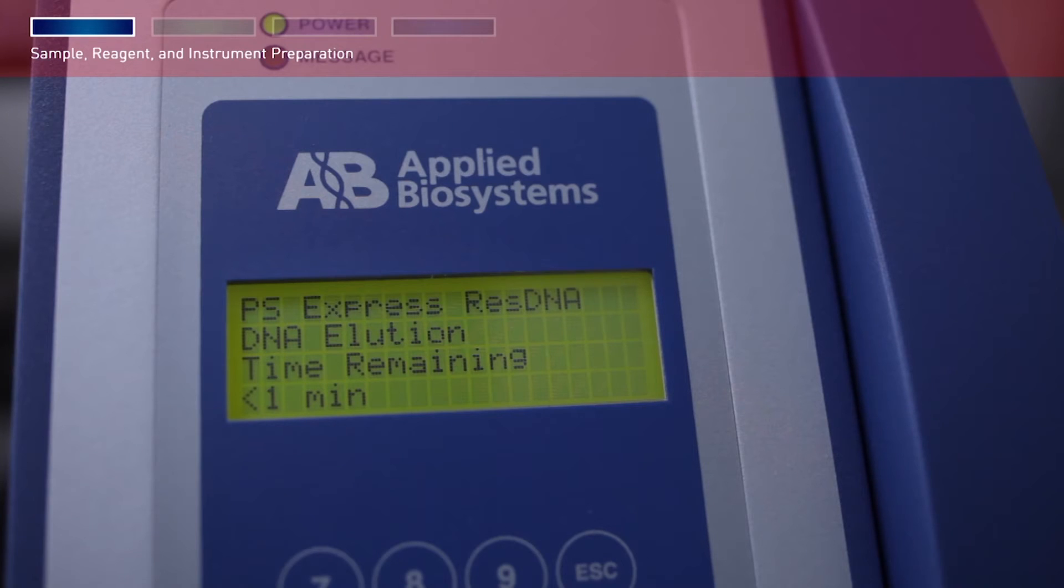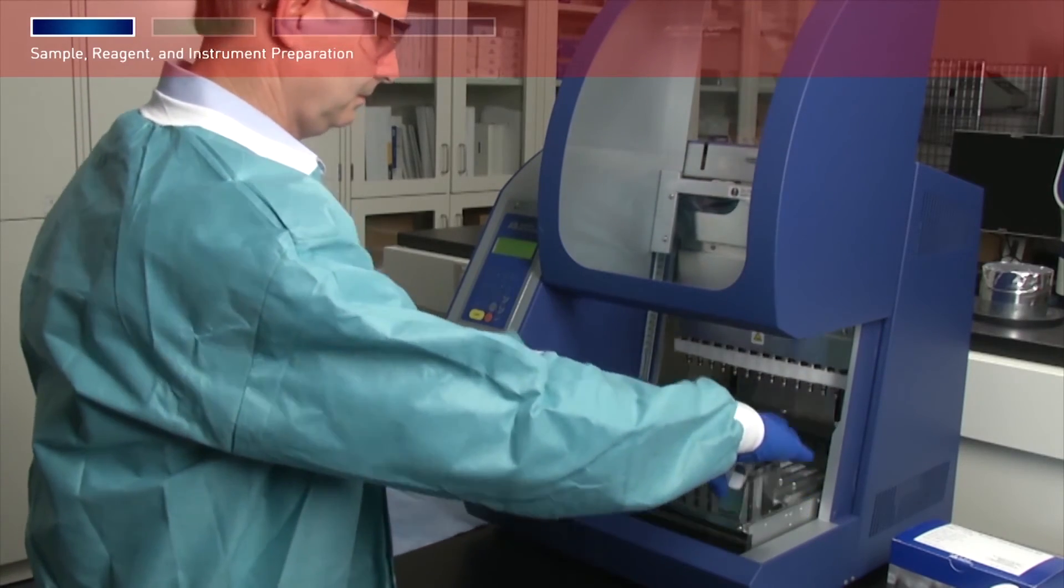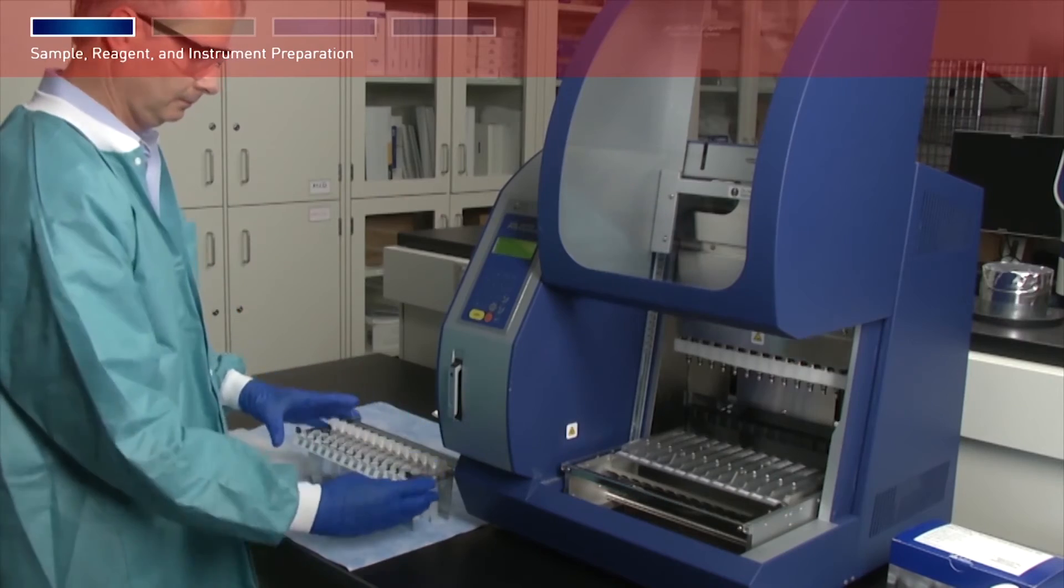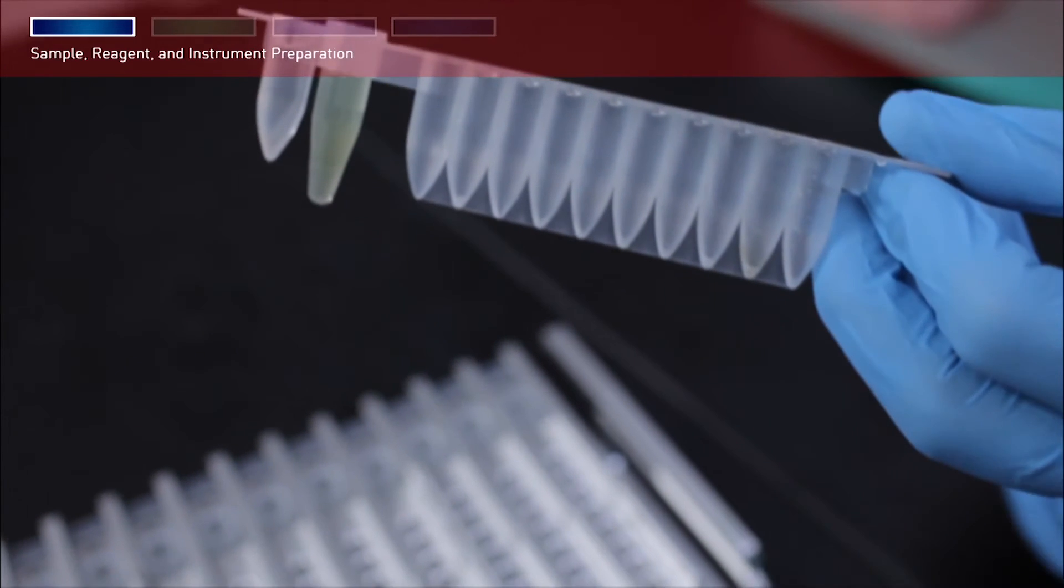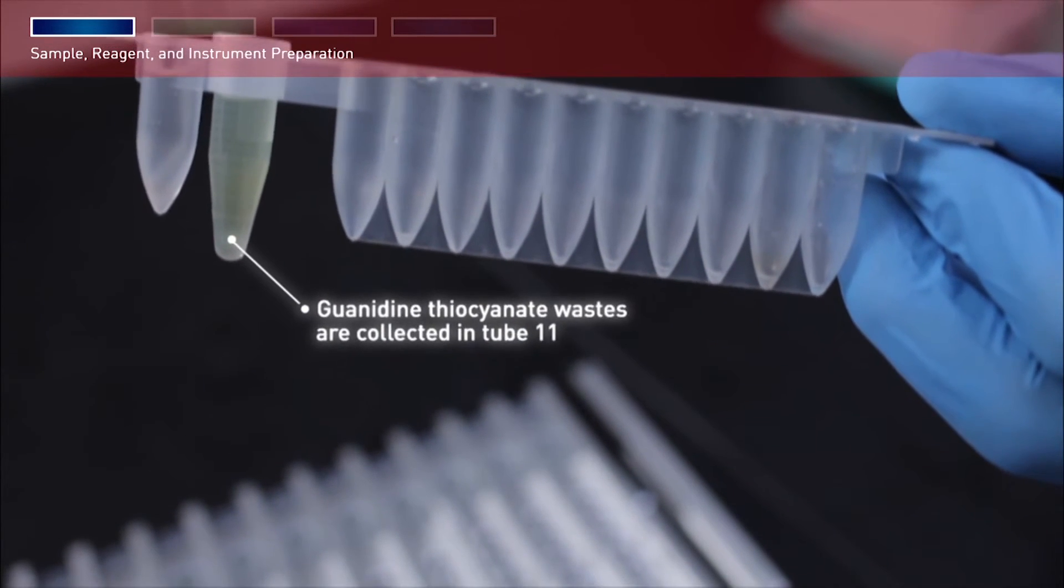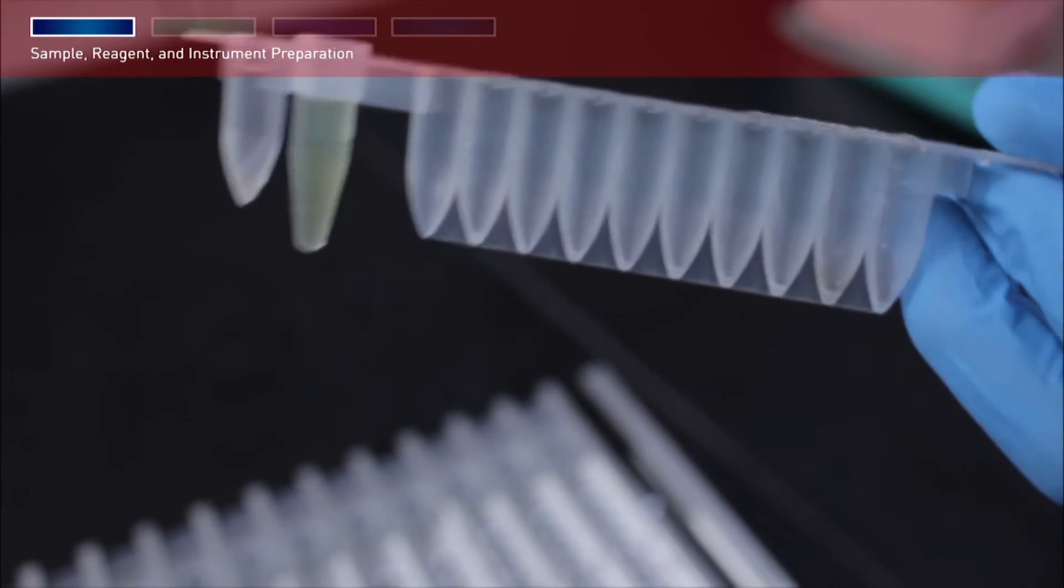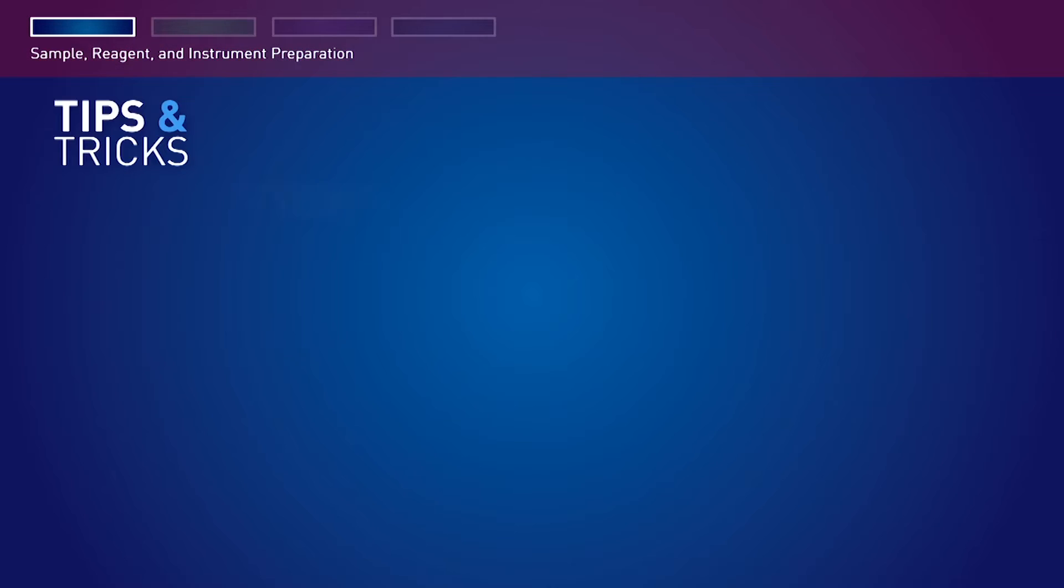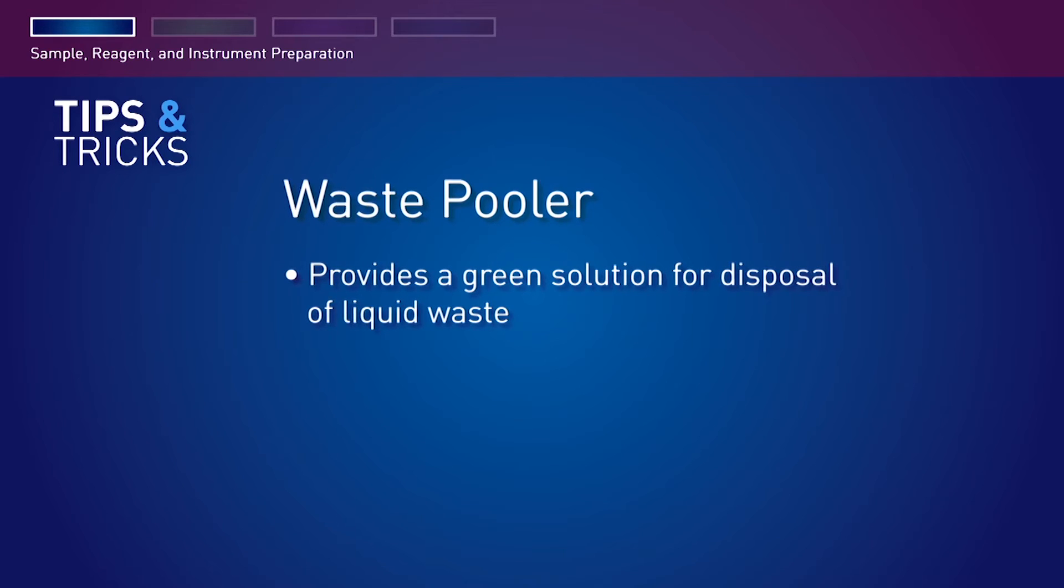At the end of the run, the instrument beeps briefly and the digital display shows additional options. Select an option, then open the instrument door. Remove and cap the elution tubes containing the purified nucleic acid. If you ran the waste pooler protocol, the guanidine thiocyanate wastes are collected in tube 11 and the alcohol-based wastes are collected in tube 12, leaving the rest of the cartridge empty and easy to dispose.